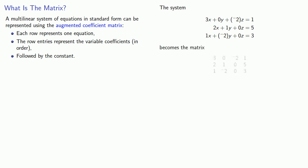So the first row of the matrix corresponds to the first equation as the entries of the first row correspond to the coefficients in order: 3, 0, negative 2, followed by the constant 1. And likewise if I take a look at the second row of the matrix, these entries come from the second equation, the coefficients 2, 1, 0, and the constant 5.